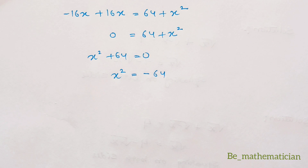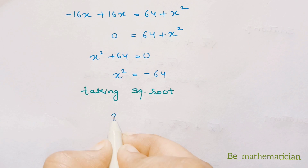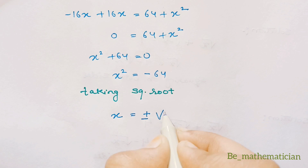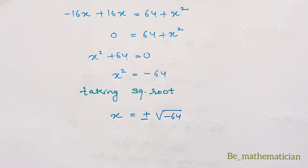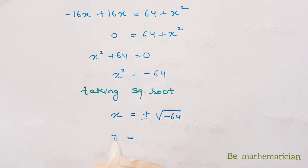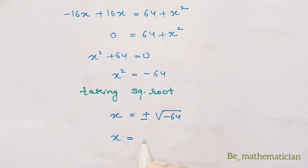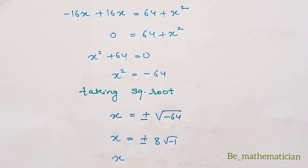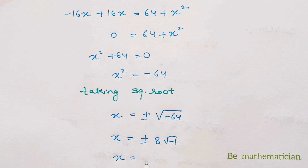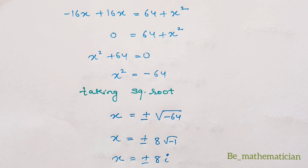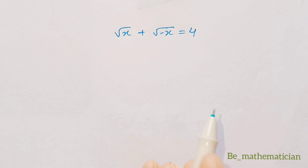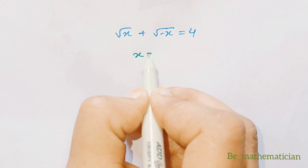Taking square root on both sides we get x = ±√(-64). Since √64 = 8, we get x = ±8·√(-1). Since √(-1) = i (the imaginary number), we can write x = ±8i. These are our values of x. So for √x + √(-x) = 4, the answer is x = ±8i.